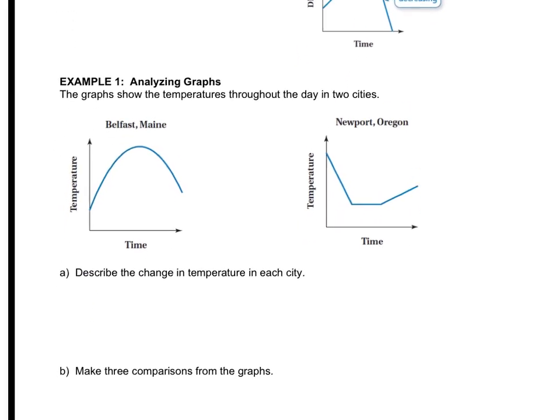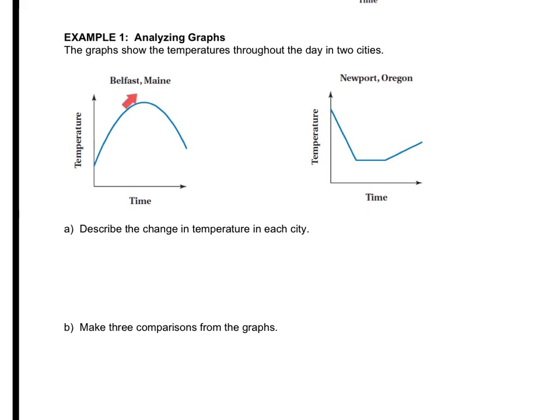Let's look at some other examples of different types of relationships. We've got two cities — one in Maine and one in Oregon, on different sides of the country. They have a similar geography in that they're both on the coastline, but they have some differences. In Belfast, Maine, as the day goes on, the temperature increases, then hits a peak about midday, and then starts to decline. In Oregon, the temperature starts off warm, then decreases, so in the middle of the day it's actually a little chilly. It stays the same for a bit, then increases slightly, and then the day is over.